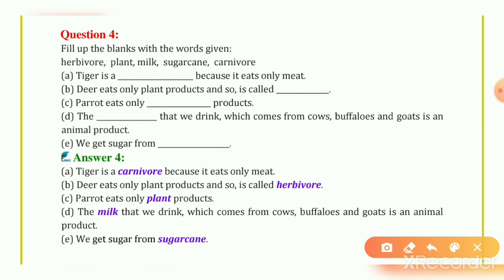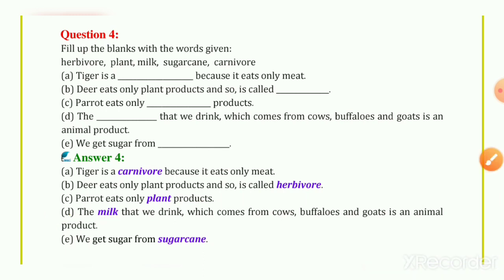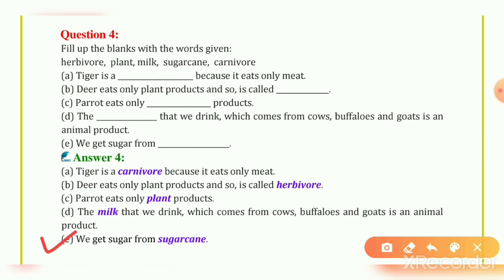Third: Parrot only eats plant products — answer: Plant. Fourth: The blank that we drink which comes from cows, buffaloes, and goats is an animal product — answer: Milk. यह सब animal products milk में से मिलते हैं। Last: We get sugar from blank — answer: Sugarcane.